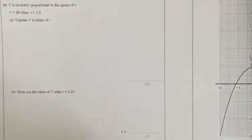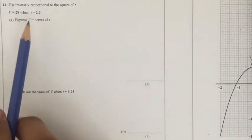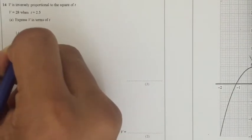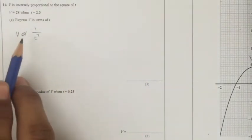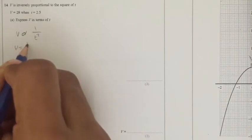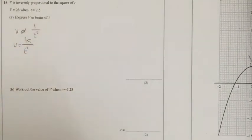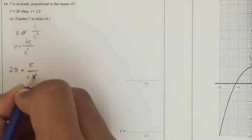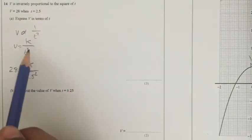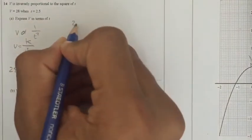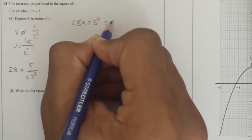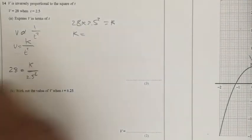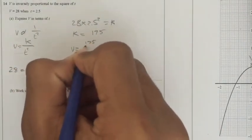Question 14. V is inversely proportional to the square of T. When V equals 28, T equals 2.5. Express V in terms of T. Okay, so V is inversely proportional to the square of T. So V is proportional to 1 over T squared, which is the same as saying V equals K over T squared. So 28 equals K over 2.5 squared. And what this question is asking us to do is find K and then substitute it into this formula. So 28 multiplied by 2.5 squared equals K. K equals 175.